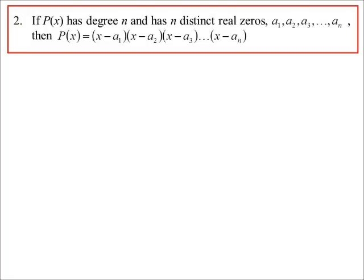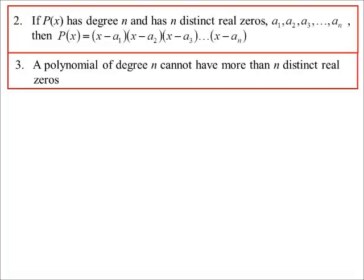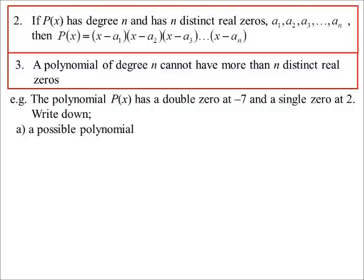Of course, that's if it's monic. If it's not monic, there might be a constant out the front or something like that. And so that leads on to this idea, which pretty much is the same as the last one. You can't have more than n solutions. We have a double zero at negative 7, a single zero at 2, write down a possible polynomial. Now, when it says a possible polynomial, we're sort of going to generalize. So we cover every possible polynomial.